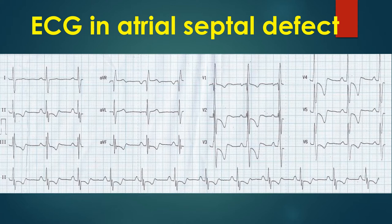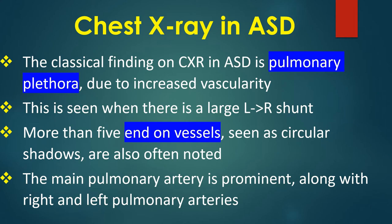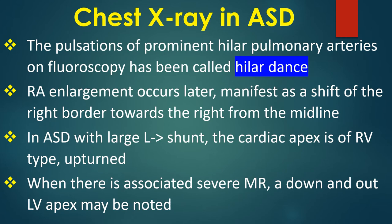When there is severe pulmonary hypertension in ASD, right ventricular hypertrophy and strain patterns are manifest on ECG. The secondary R wave in V1 is tall, and ST segment depression with T inversion are found in anterior and inferior leads. ECG in ASD with severe pulmonary hypertension shows tall R' in V1, ST depression in inferior leads and V2 to V5, and T inversion in inferior leads and V1 to V6. The classical finding on chest X-ray in ASD is pulmonary plethora due to increased vascularity, seen when there is a large left to right shunt. More than 5 end-on vessels seen as circular shadows are often noted. The main pulmonary artery is prominent along with right and left pulmonary arteries. Pulsations of prominent hilar pulmonary arteries on fluoroscopy are called hilar dance. Right atrial enlargement occurs later, manifesting as a shift of the right border towards the right.